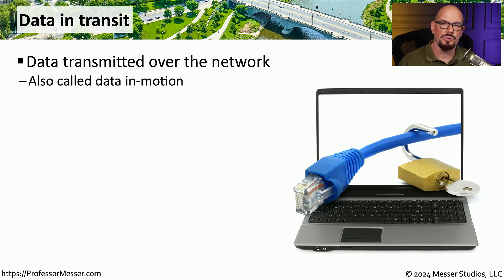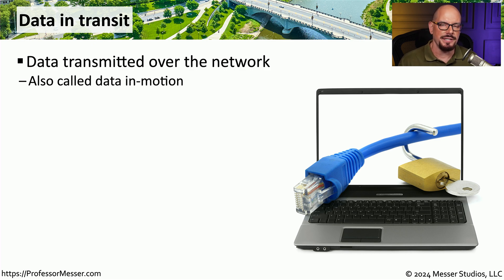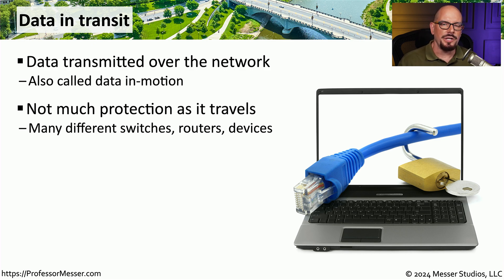If data is transferred across the network, we refer to that as data in transit. You'll sometimes hear this referred to as data in motion. Anytime you have information being transferred over a wired or wireless network, you have data in transit. Most of the devices we use in our network infrastructure are designed to get information from one place to another, and not necessarily to protect that data.